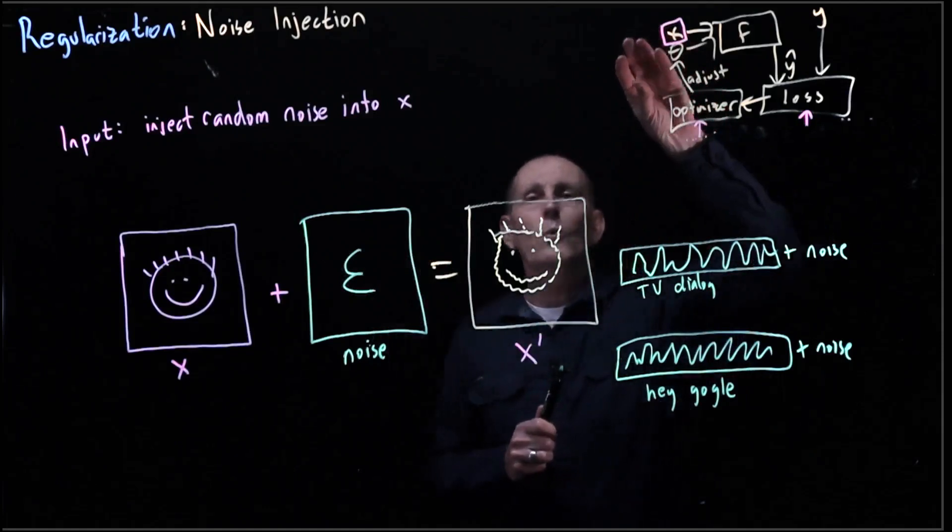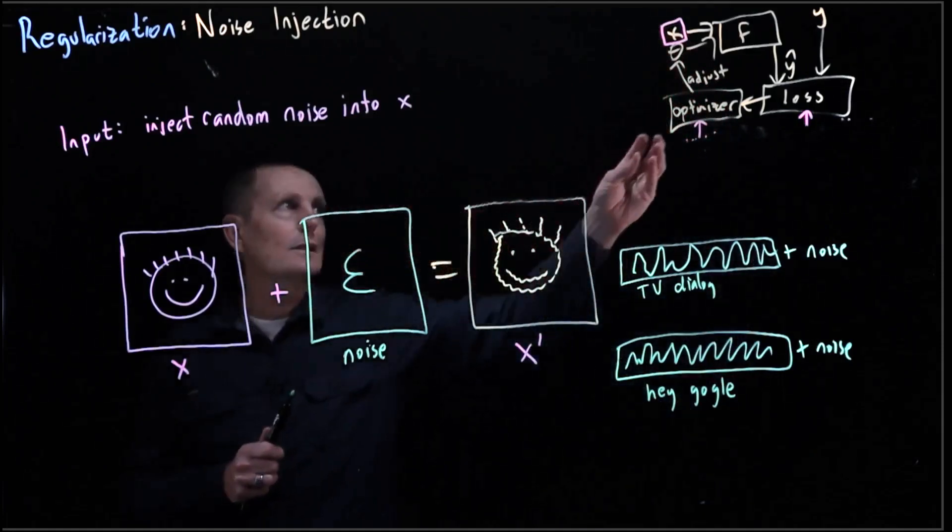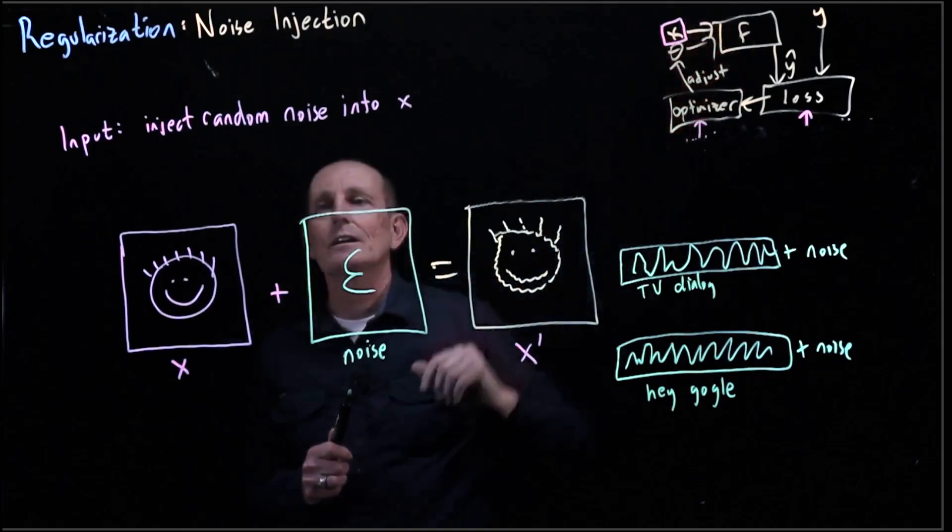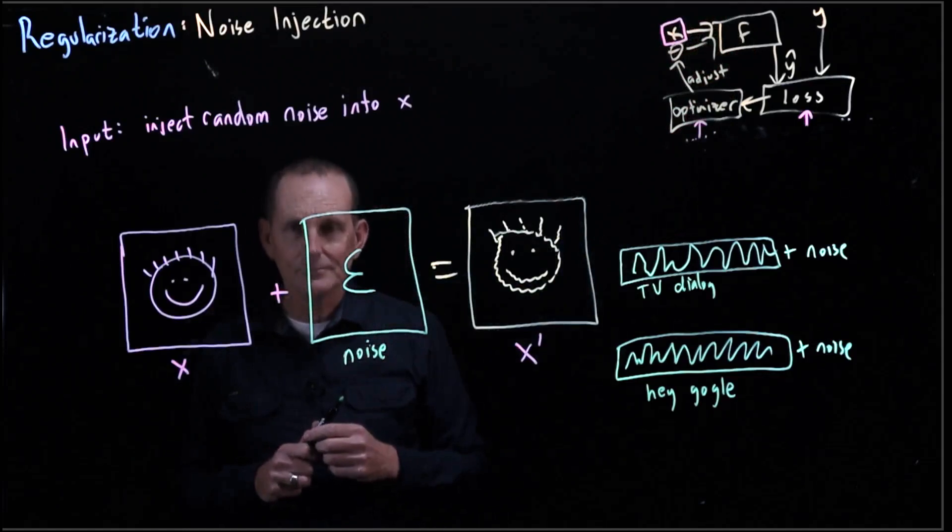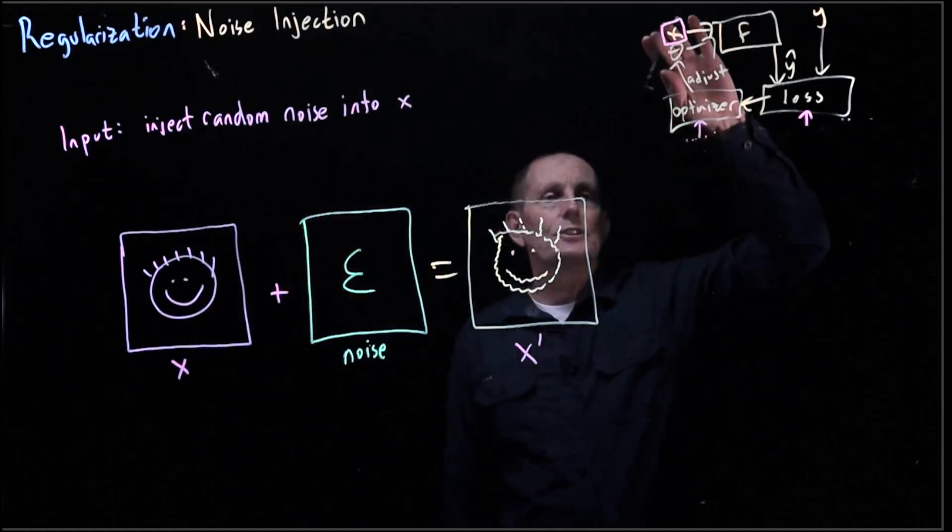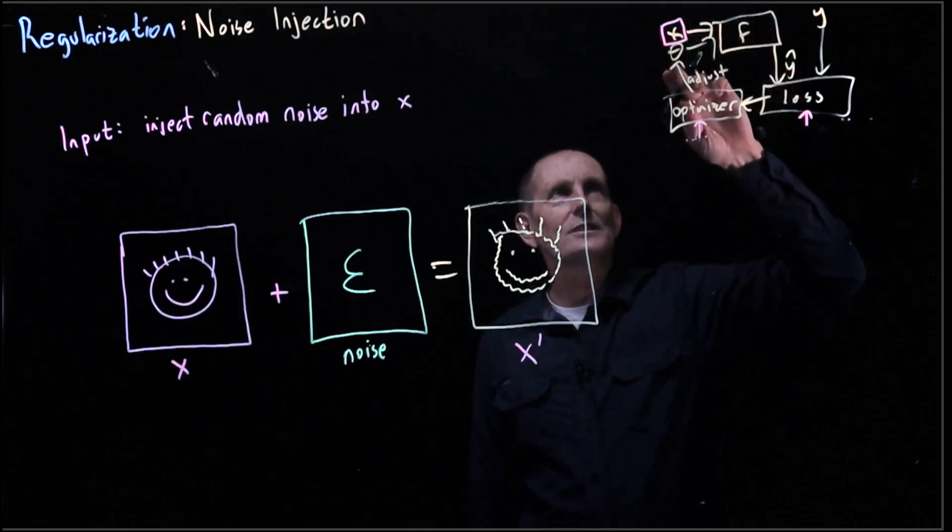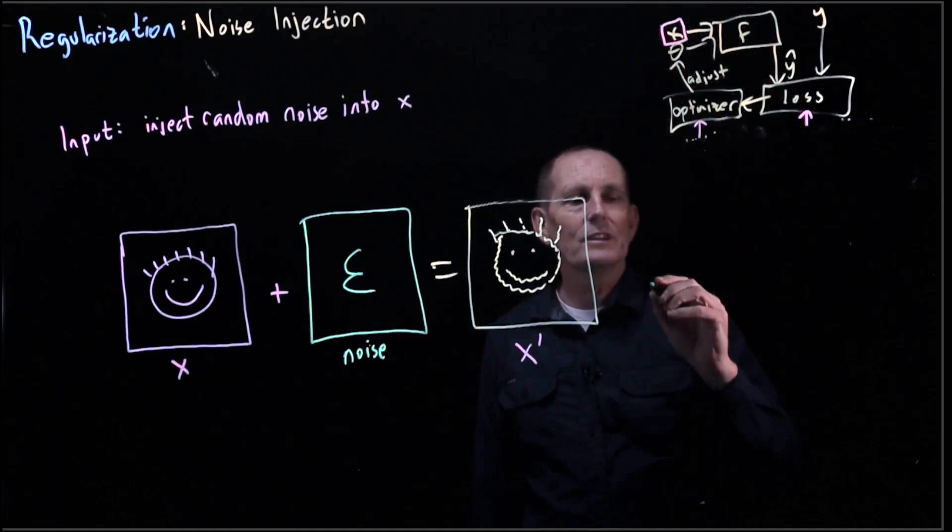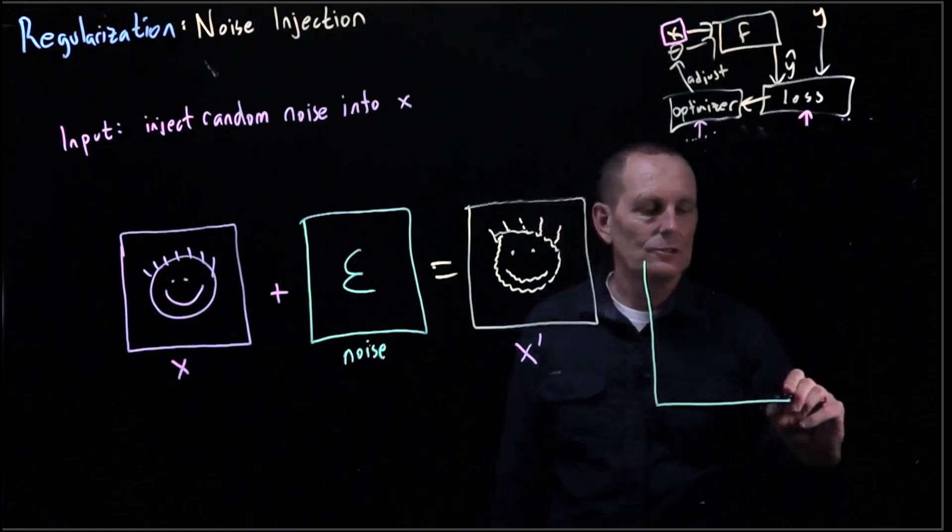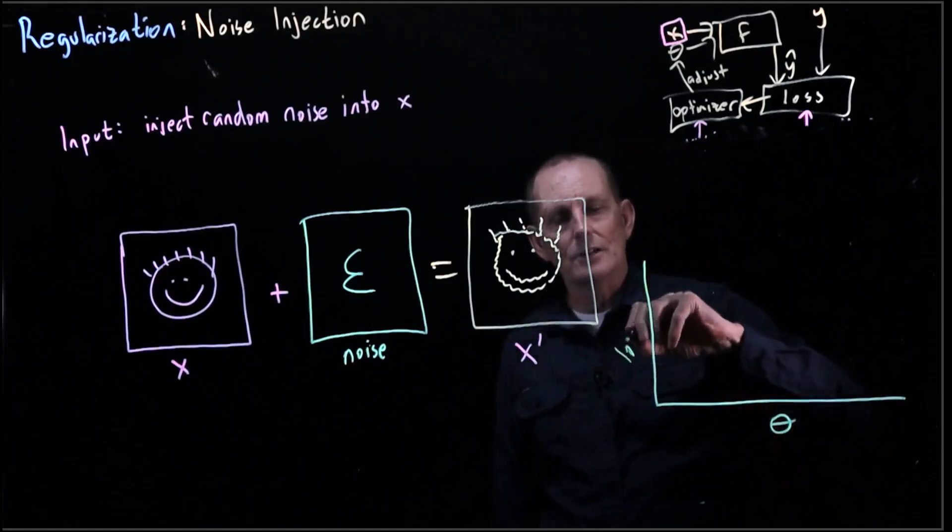And so what it helps do is ensure that the model is robust, that our choice of theta here is robust to perturbations. Let me show you a chart. So what these perturbations are going to do is make some adjustments to theta. So they're going to be moving theta around.